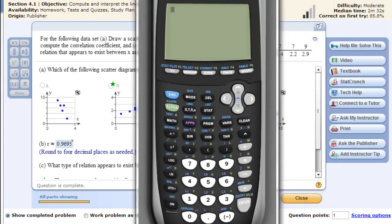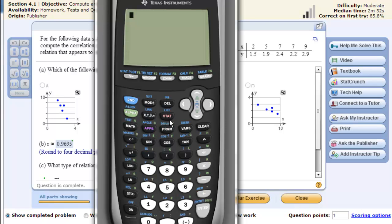So I go to the calculator and I go into my stat edit. In list 1 I have 2, 5, 7, 7, 9 and then 1.5, etc., through 2.9 in my list 2.